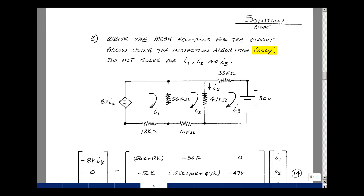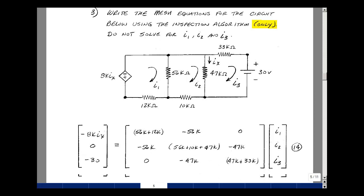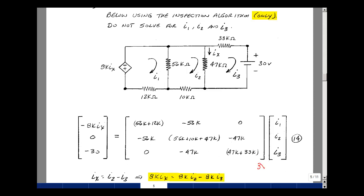Problem number 3, you're given a circuit containing resistors, an independent voltage source, and a current controlled voltage source. We have to find the mesh equations for this circuit using our inspection algorithm to set up the solutions for I1, I2, and I3, but not to solve for them. We'll start with a blank 3 by 3 matrix. This column associated with I1, column 2 with I2, column 3 with I3. We're going to go around mesh number 1, add up all the resistors, and put that in row 1, column 1. What's between meshes 1 and 2 will go in row 1, column 2, but negated. So minus 56k, nothing between 1 and 3, so is 0. Go around the mesh counterclockwise, you see a minus 8000 times I of X.